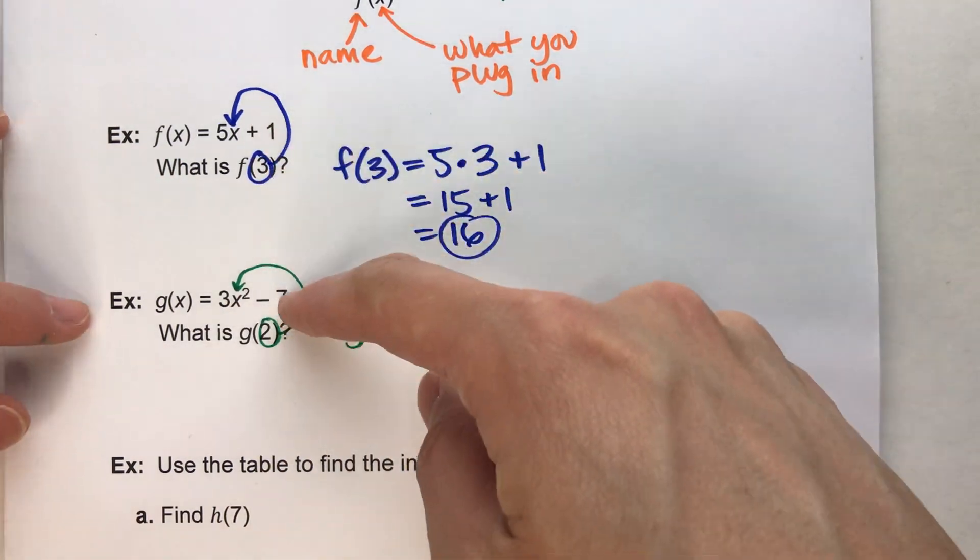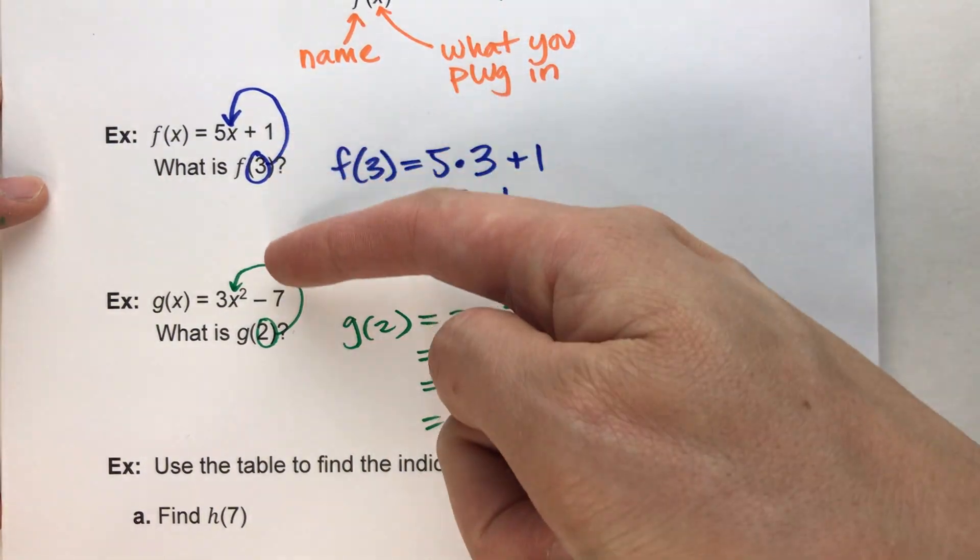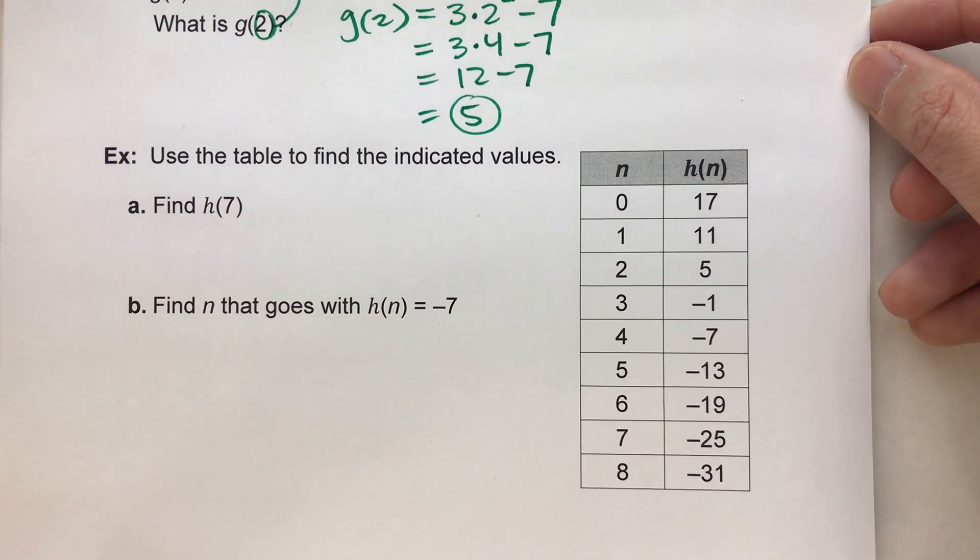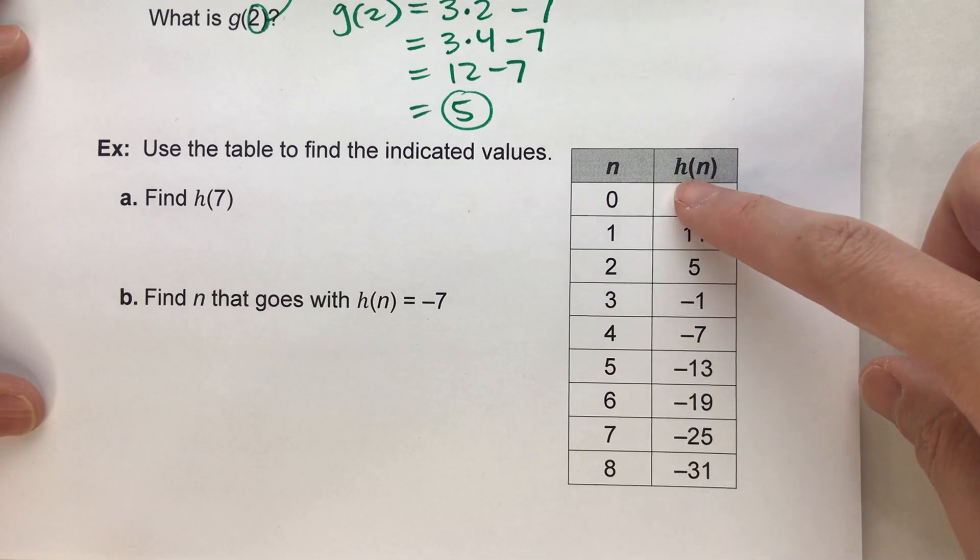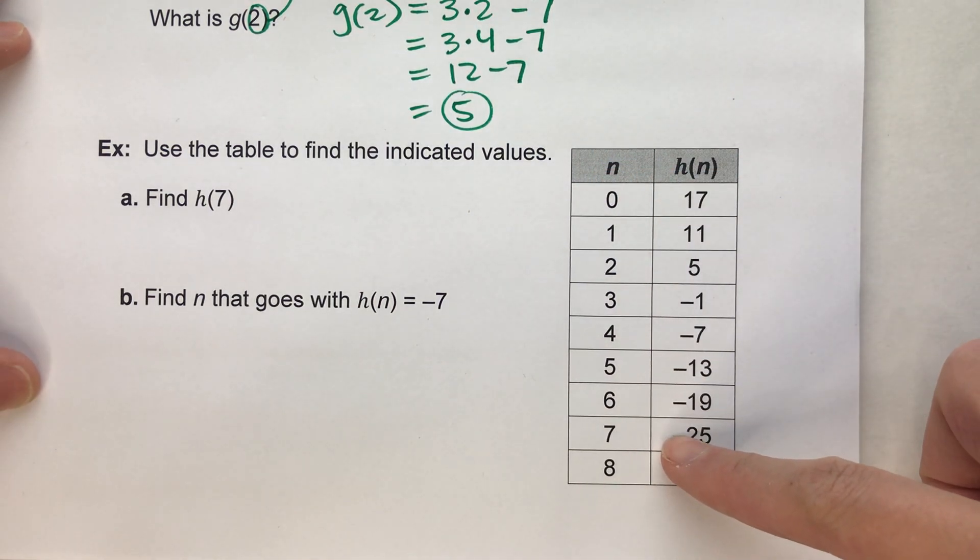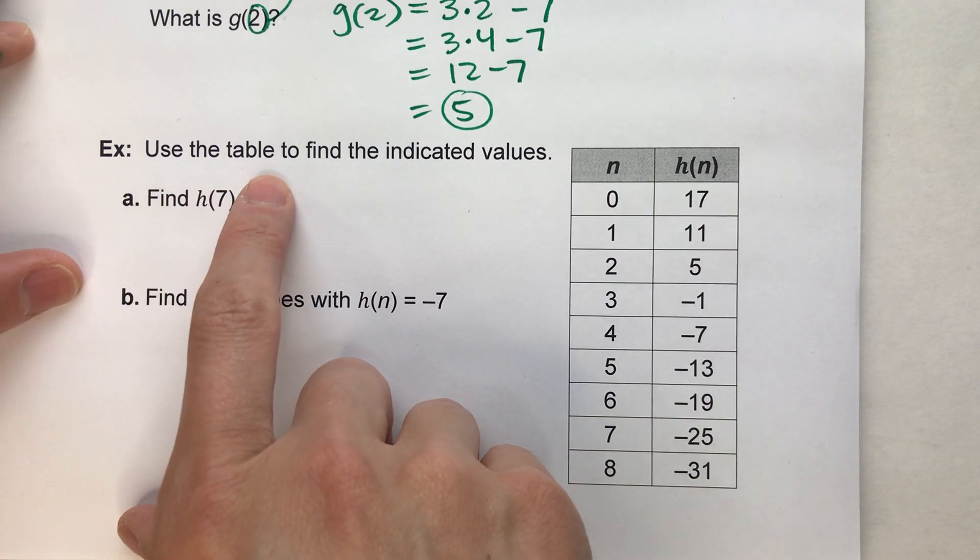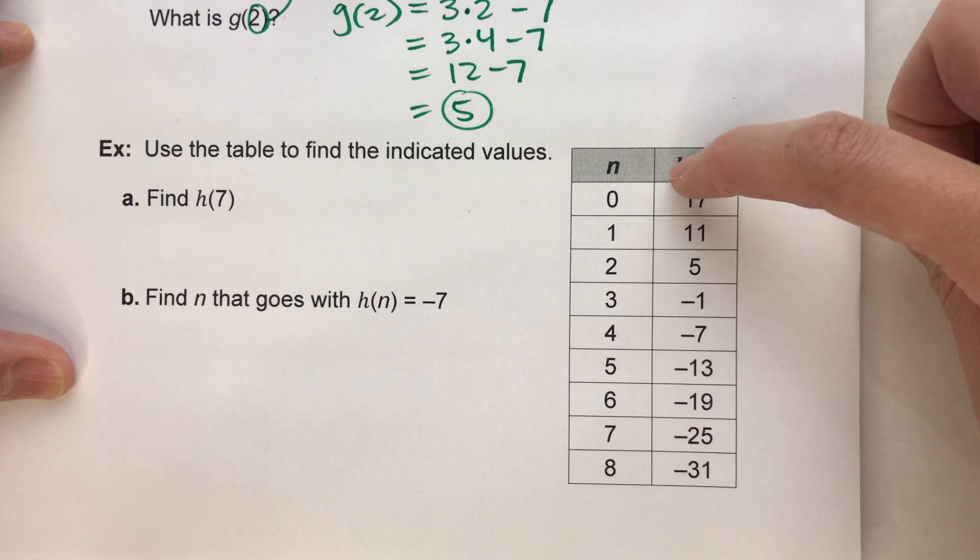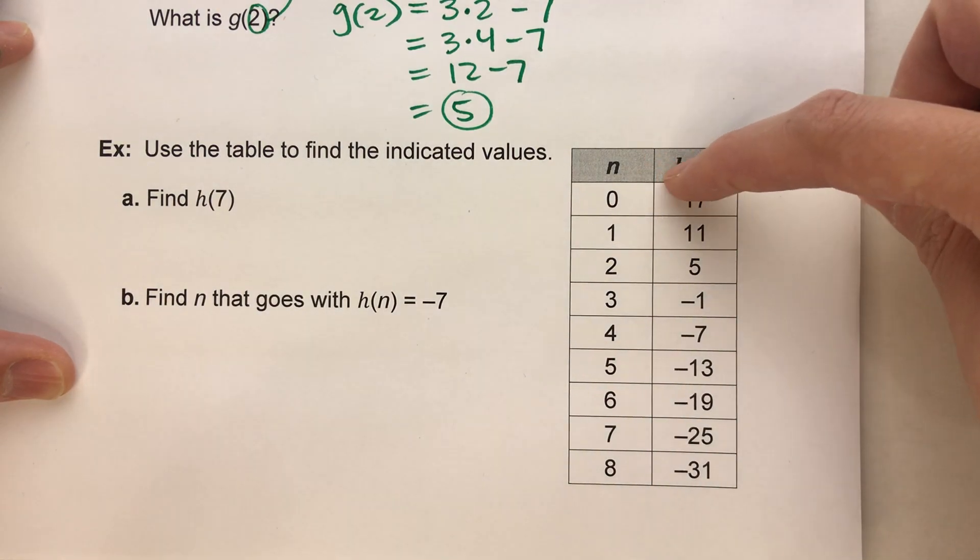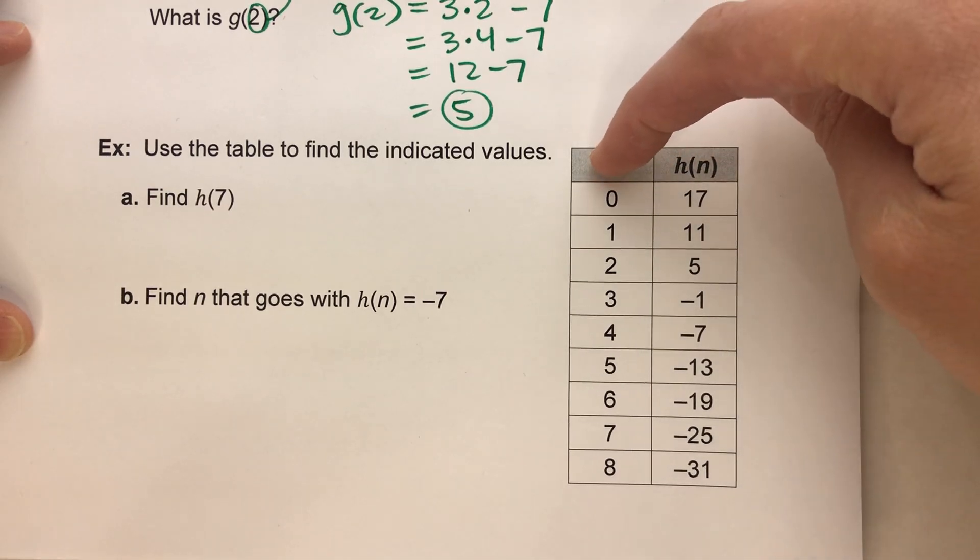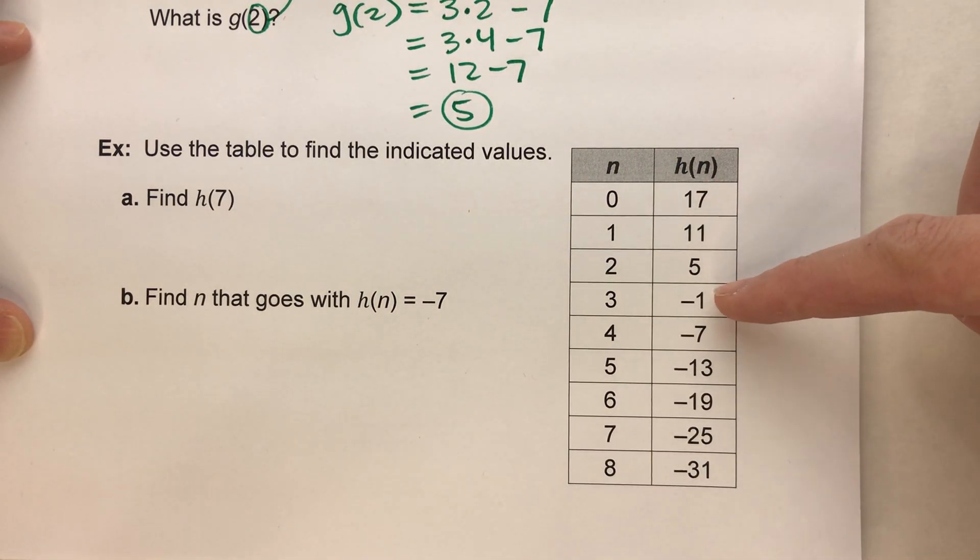Now the funny thing about function notation is, you don't always have to actually have the rule to answer problems. Down below, this function, h, is given to you in a table. So it says, use the table to find the indicated values. So here's n, and here's h of n, meaning we have some function rule, called h, where every time we put n into it, we get these answers.